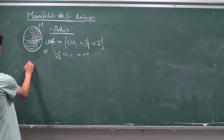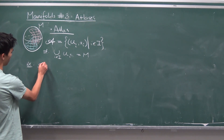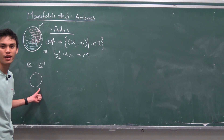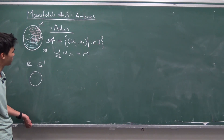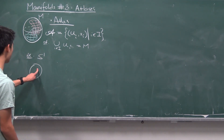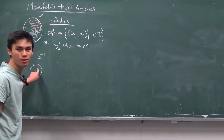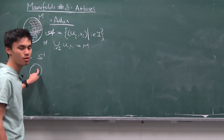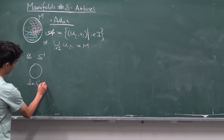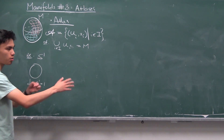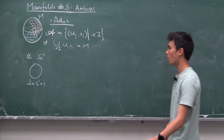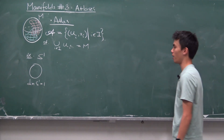For example, we have S¹ which is the circle. We want to start covering the circle in charts because this manifold isn't homeomorphic to any sort of Euclidean space. The dimension of the circle equals one, so we want to find homeomorphisms to parts of one-dimensional Euclidean space — that is, parts of the real number line.